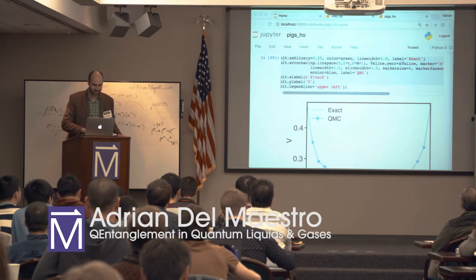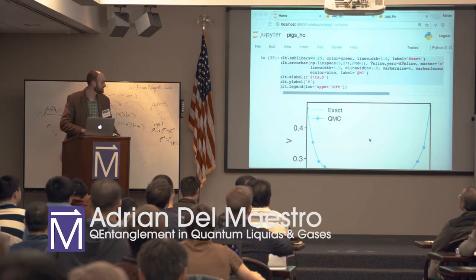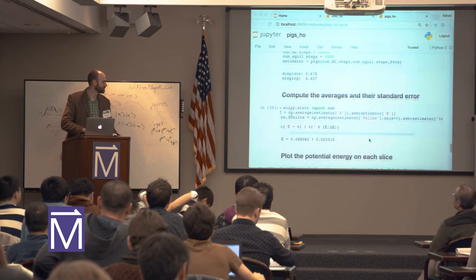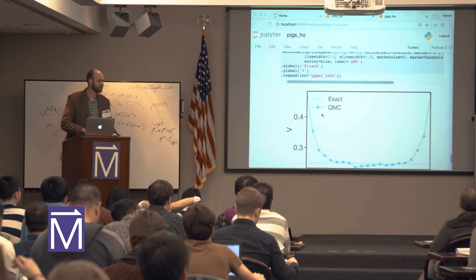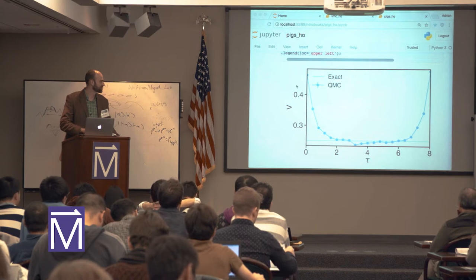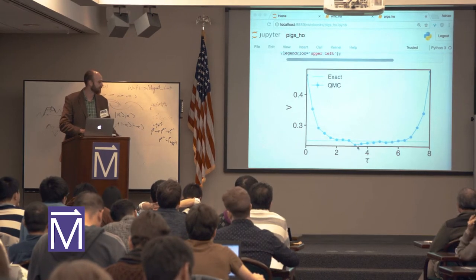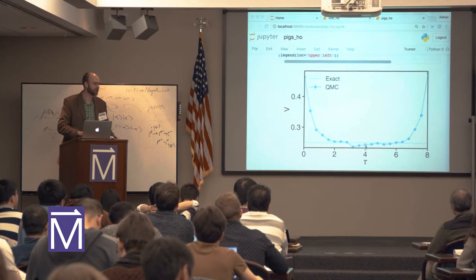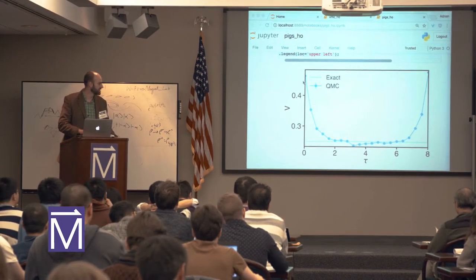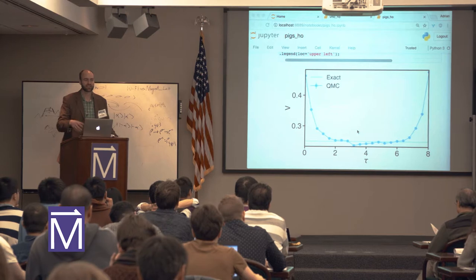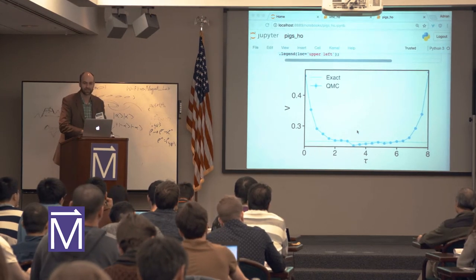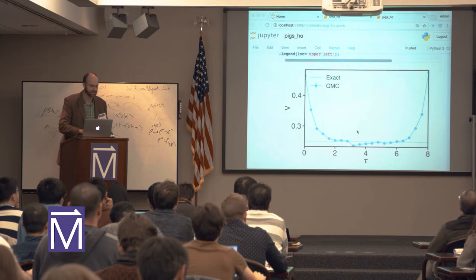With this talk, I thought I'd just go back to what we found last time, which was the path-integral ground state method. We used it for the harmonic oscillator with the simplest wave function possible, and we got this expression for the potential energy as a function of imaginary time. The physical time slice where we sample the ground state wave function was right here, and you can see it converges very quickly. The systematic bias that would have been there with variational Monte Carlo is essentially absent, or it can be projected out over these time slices.